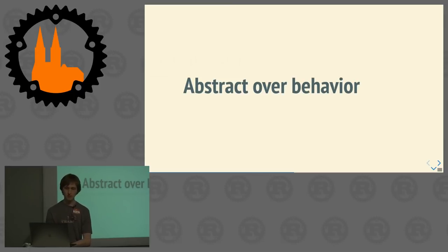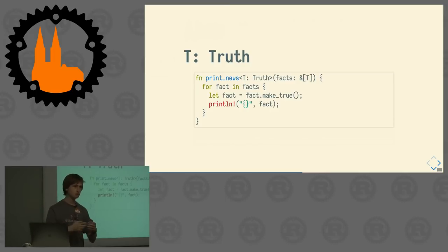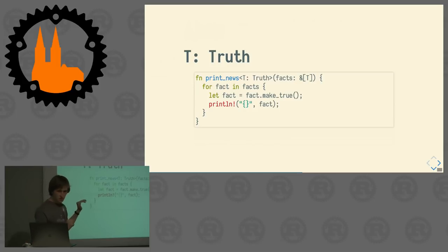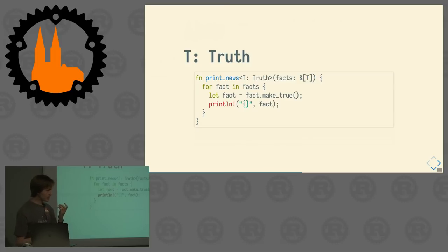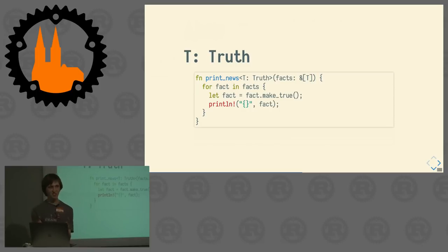We can share behavior between different data types, and we can abstract over this behavior. The way we do this is by writing a function called `print_news`. As an input parameter, it takes a reference to a slice of T — some list that contains T's. T is just a placeholder, a type parameter, and it has constraints on it. Right after the function name in the angle brackets: `T: Trues` means we need any type that implements the Trues trait. So in this function we can make them true, because we know any type in this list implements Trues.